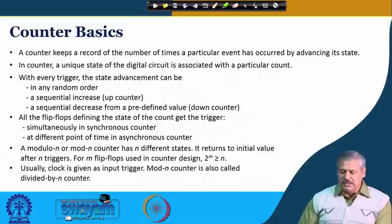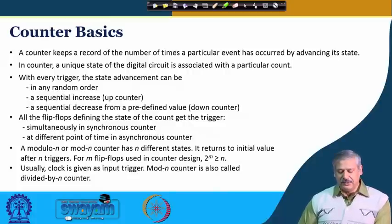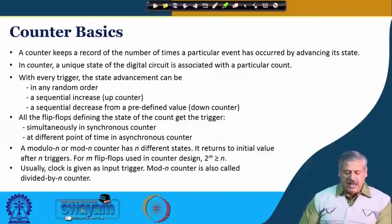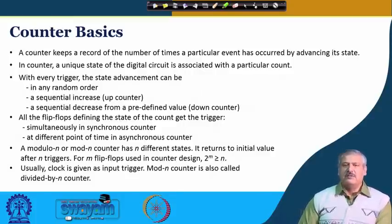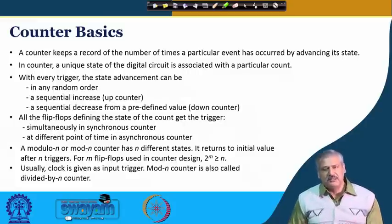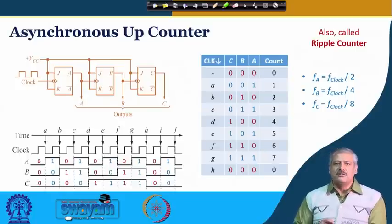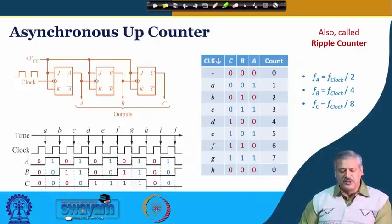A modulo-n counter has n different states, and after a count of n it comes back to its initial value. If there are m flip-flops used for counter design, 2^m must be greater than or equal to n. Usually in most applications the clock is given as the input trigger, but it could be some other signal. A mod-n counter is also called a divide-by-n counter, because the output effectively has a rate of change equal to the input clock divided by the modulo number. With this basic understanding, we look at the asynchronous up counter.